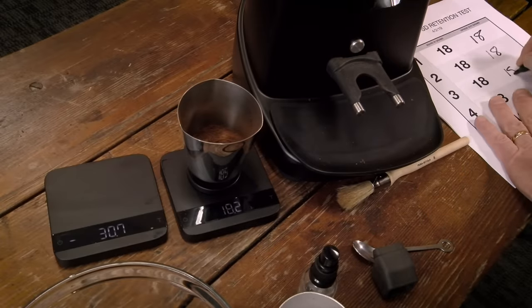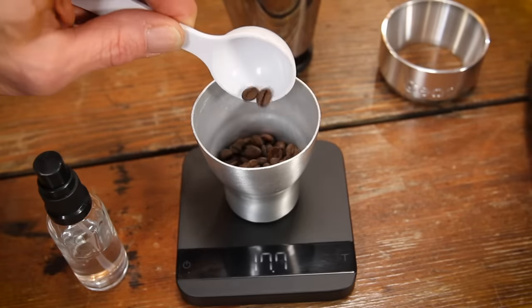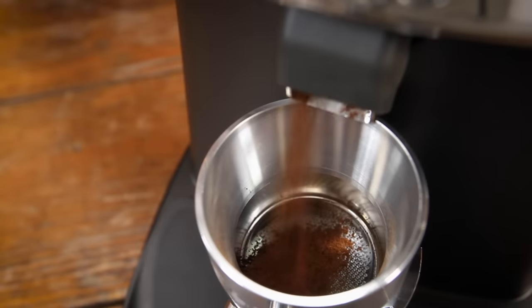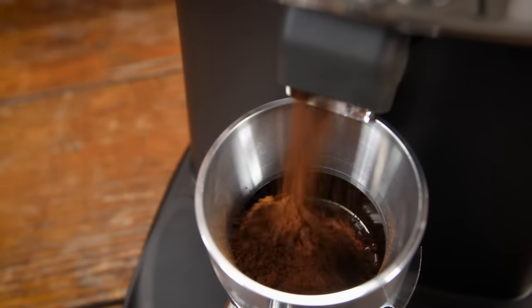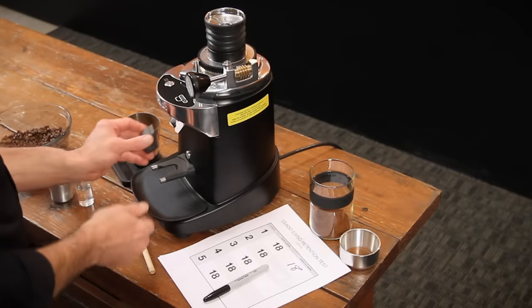If not familiar with single dosing, it's grinding only the amount of beans needed for each brew. That can be for espresso, pour over, press, or really any brew method. So typically you'd weigh the beans and only grind what you need. The hope being you get about the same weight of ground coffee out of the grinder as the beans you had put in. And as we'll see in the test results later in this video, the E37SD does an excellent job in that respect.